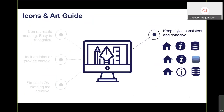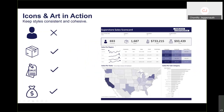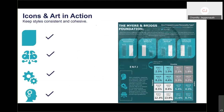Keep icon styles consistent and cohesive. If some icons are solid/shaded and others are silhouettes, it looks inconsistent and one icon draws more attention than the others. On a dashboard, every icon should follow the same structure — all shaded or all silhouette — so no single icon stands out more than the others. In the TEDx visualization, every icon and image used is solid, maintaining that consistent theme throughout.